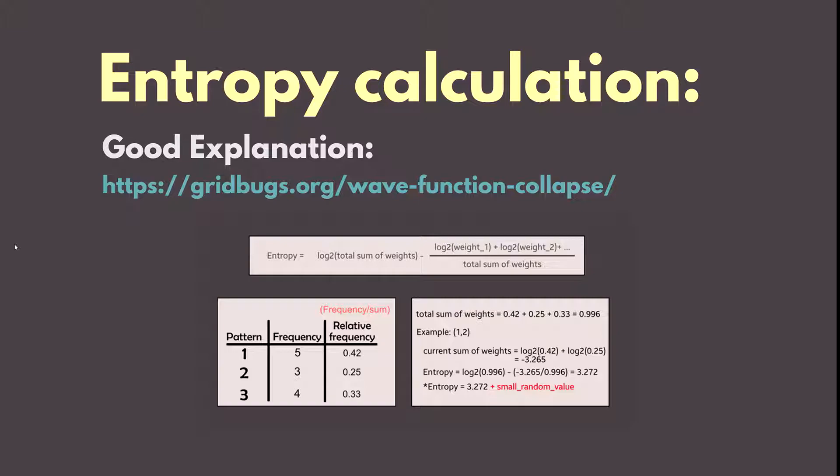For calculating the entropy we have an equation that uses the frequency weights that we have calculated before. The idea is that we have a certain number of possible pattern indices. The more we have the more we add to the score.